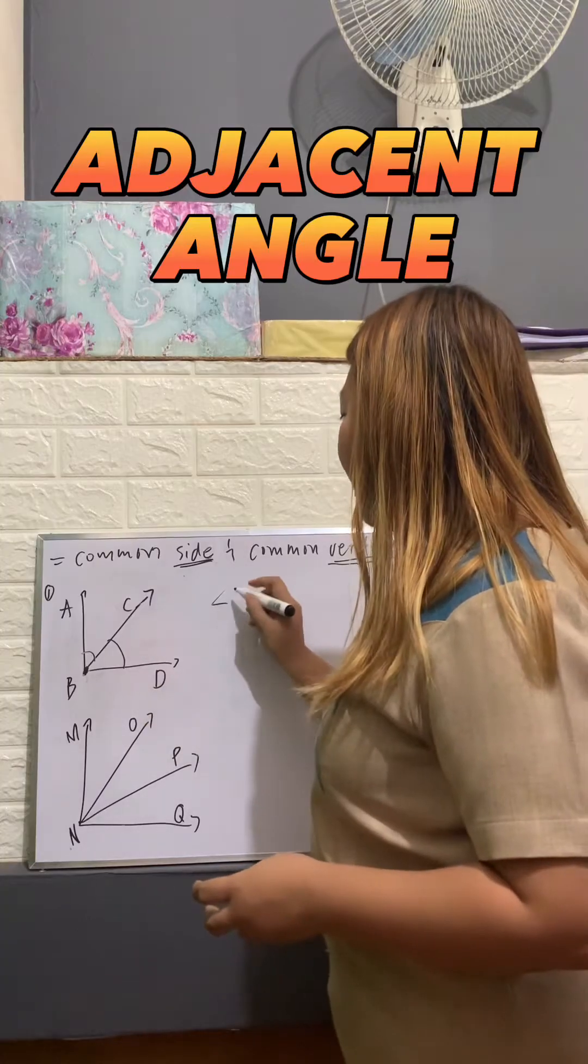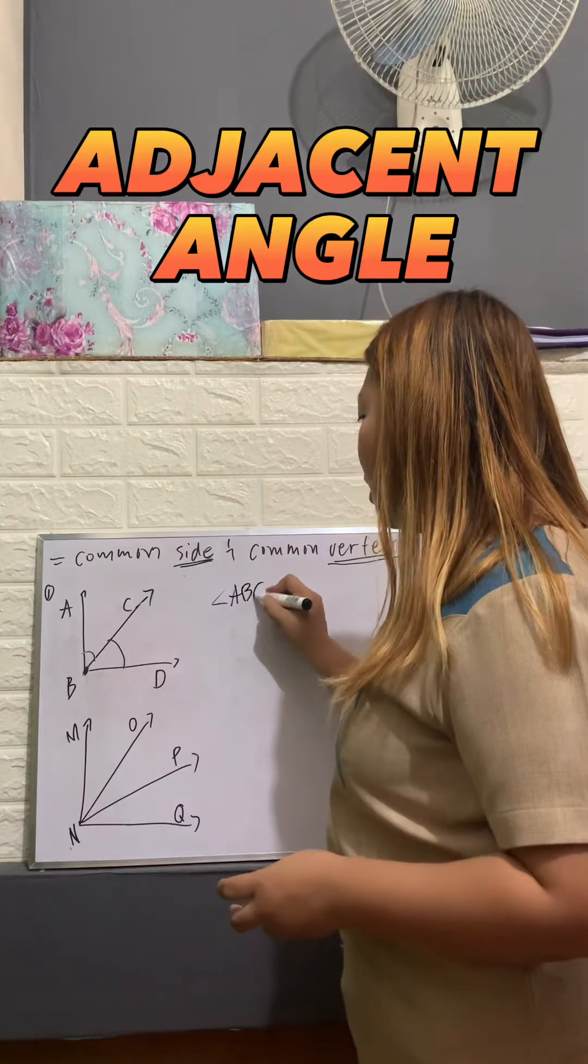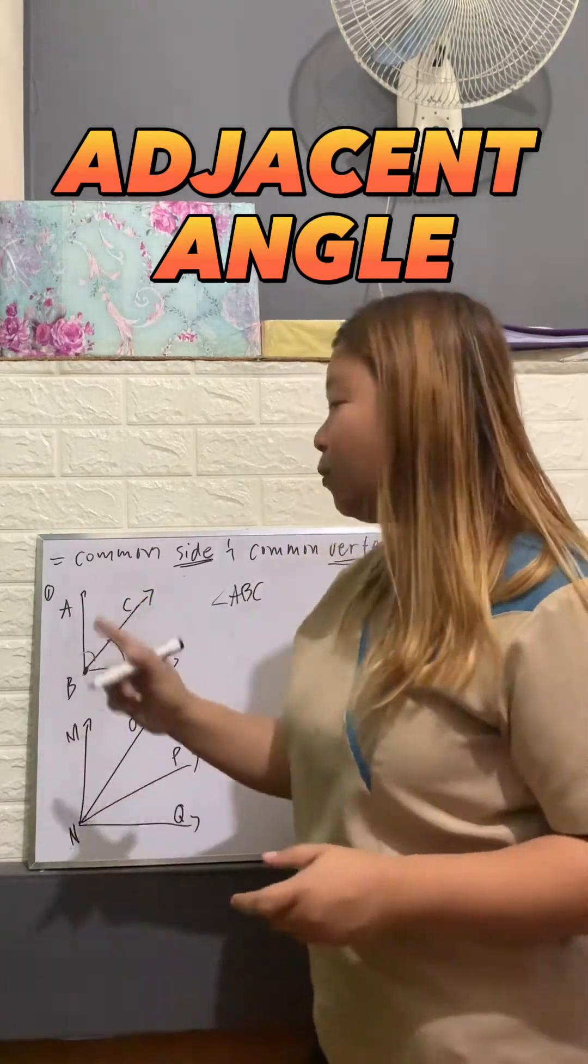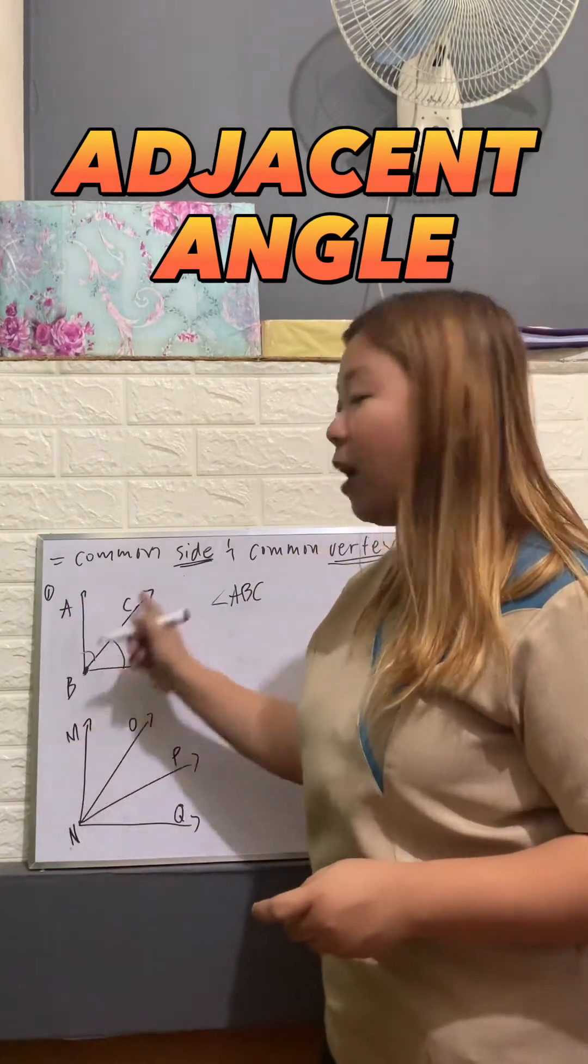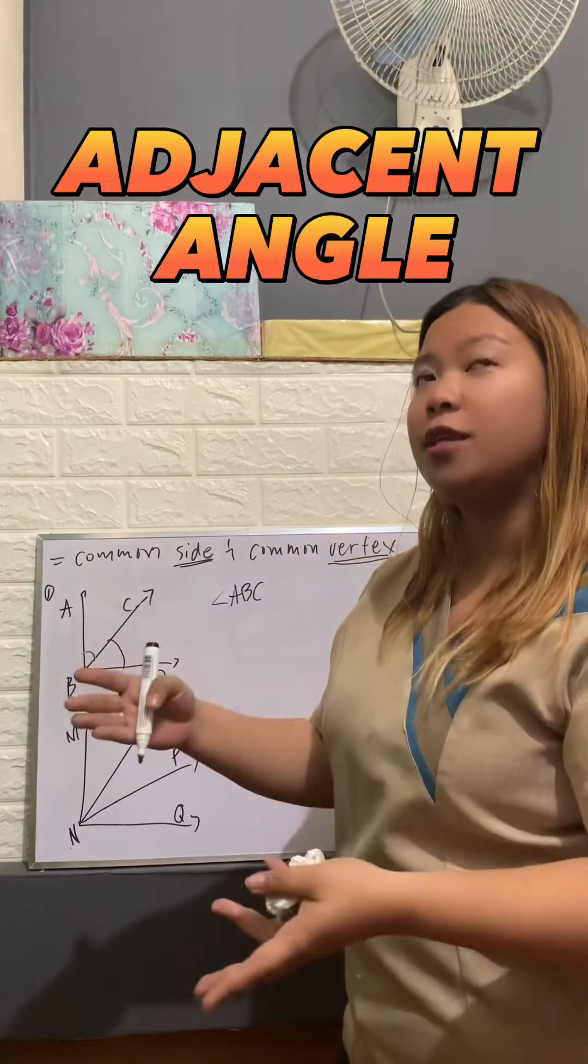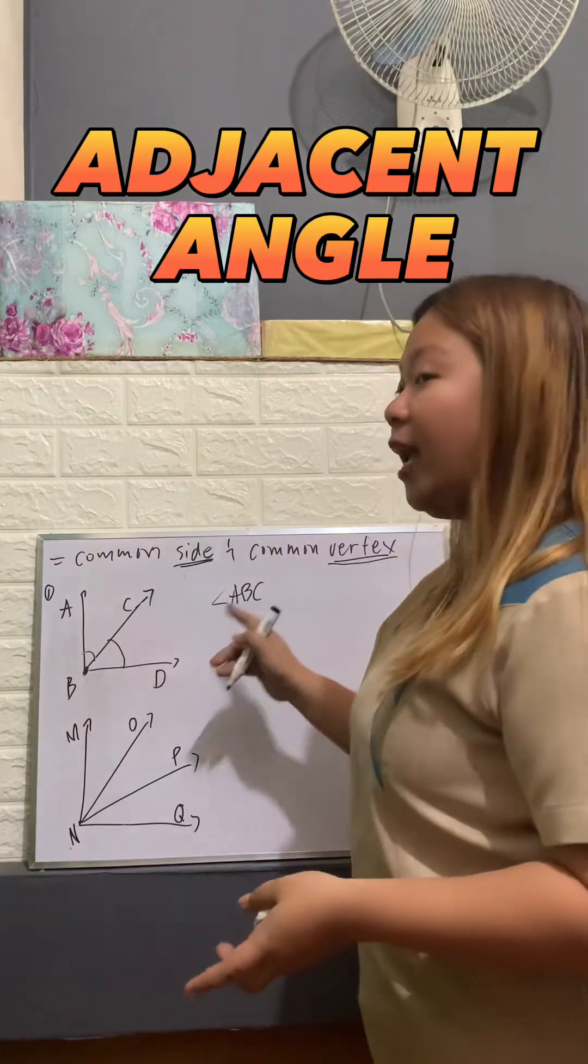Now if I take angle ABC here, what is the angle that will be considered adjacent to our angle ABC? If you're going to choose, it should have a common side and a common vertex.